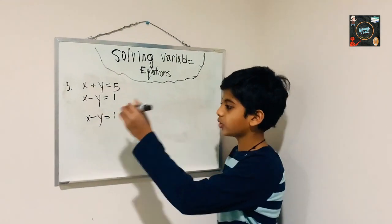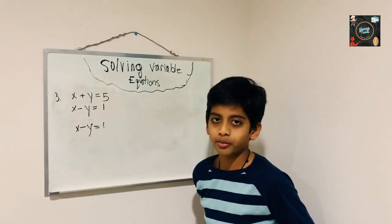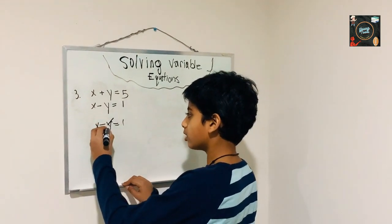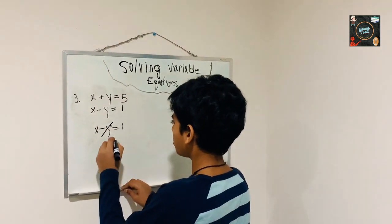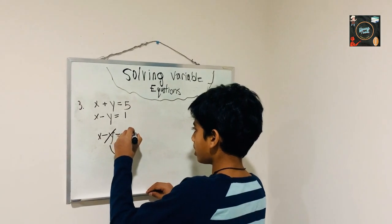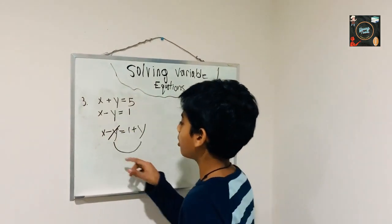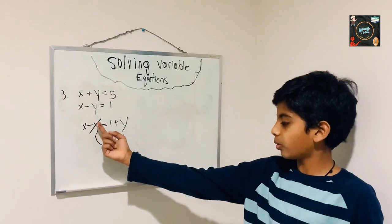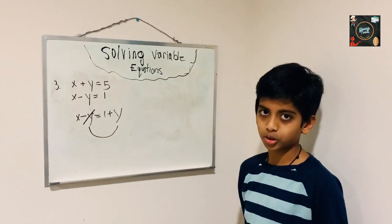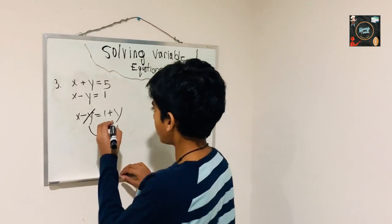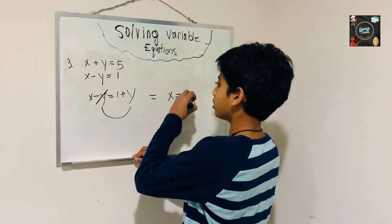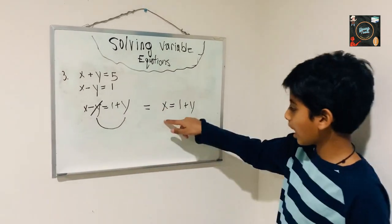When we do this, we have to write the variable in terms of another variable. What we have to do is take the negative y and switch it over to the other side. It would become 1 plus y, because when you switch a variable or number to the other side you change its sign to the opposite. So now we got x equals 1 plus y.